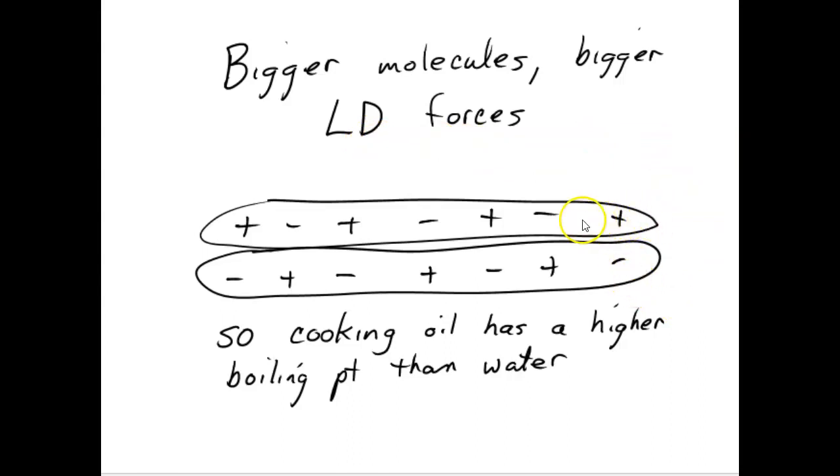So if you have something like cooking oil, it's a huge molecule, and two of them are next to each other. You're going to get all these positives and negatives stuck in position, and this thing is going to be like zipped together. These two molecules are going to have a hard time separating. So while London dispersion forces are generally weaker than polar and hydrogen bonding forces, they can get stronger if it's a really big molecule.